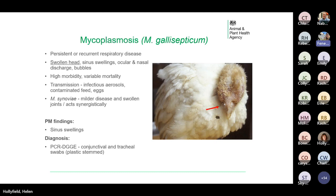I should also mention Mycoplasma synoviae, which tends to cause milder disease and synovitis, and acts synergistically with other respiratory pathogens. At post-mortem you might see swollen sinuses. Definitive diagnosis is made by a PCR-DGGE test on conjunctival and tracheal swabs — and for this test it's very important to use plastic stem swabs, not wooden ones.